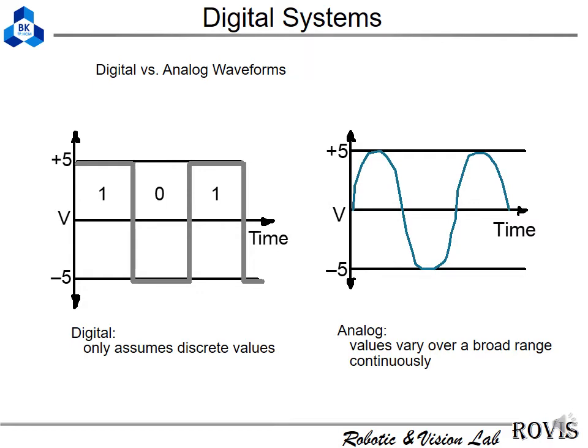First of all, we will have a brief review about what is digital and analog. As shown in the slide, the digital just has two values: high value and low value. The symbol for high value is one and low value is zero. The analog signal is the signal like the sine wave on the right-hand side, and they vary from the low value to the high value.